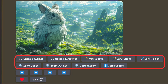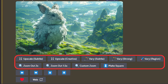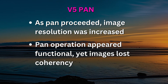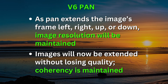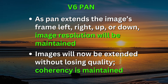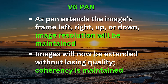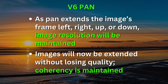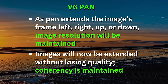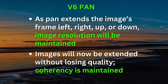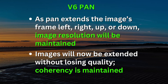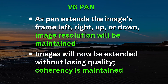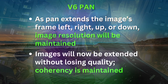All of the functions except pan will work the same as in version 5.2. In version 5.2, pan increased the size in pixels of the image as the canvas expanded. In version 6, pan will keep the same image resolution, but the frame will simply be extended left, right, up, or down as you direct. This should give you a pan that is more predictable, especially when doing portrait or up-and-down pans. It is expected that pan will keep image coherency with the original prompt and should not randomly introduce new subjects or characters along the way.